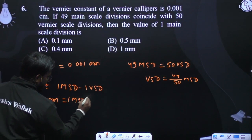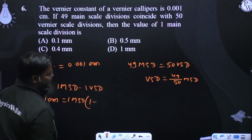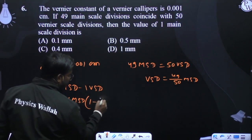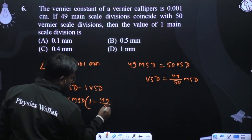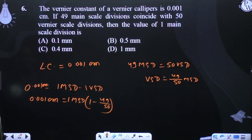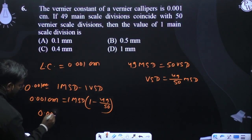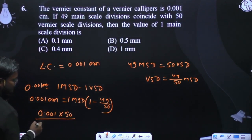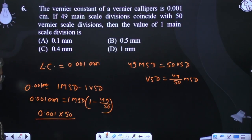So 1 MST minus 1 VST becomes 1 MST minus 49 by 50 MST. Therefore, 0.001 equals MST times (1 minus 49/50), giving us 0.001 into 50 divided by (50 minus 49).